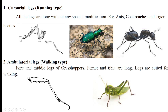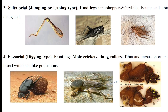Then there are ambulatorial legs, also modified for walking purposes. In grasshoppers, the fore and middle legs are modified for walking, while the hind legs are modified for jumping, which we will discuss in the next slide.